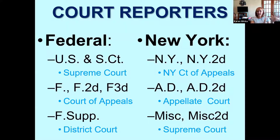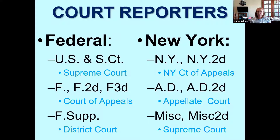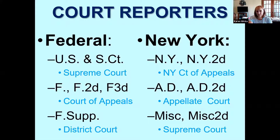New York has its own reporters. If it's the highest court in New York — the New York Court of Appeals — it's going to be N.Y. or N.Y.2d. They just have the official one. The middle court level in New York state is the Appellate Division, so that's A.D. or A.D.2d. And then if it's the lower trial courts in New York state, the Supreme Court is the lowest court in New York — those are going to be Misc. or Misc.2d. We are going to use U.S. and S.Ct. citations the most in this class.